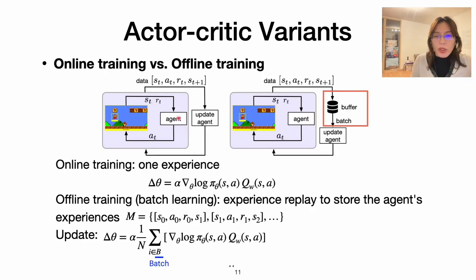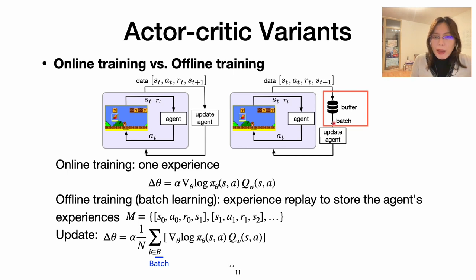Next, we compare online training versus offline training. The main difference is that offline training uses a replay buffer to store all the data collected by the agent during environment interaction. When updating, they don't update one experiment at a time — instead they sample experiments in batches, like thousands or millions of experiments from the buffer, to update once. A sum function is used to get all the batch data and compute the average gradient or loss.